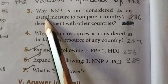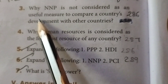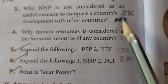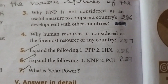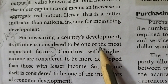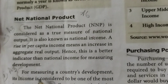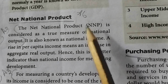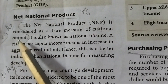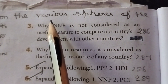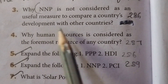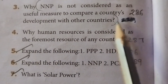Third question: why is NNP not considered a useful method to compare a country's development with other countries? (Page number 286.) For measuring a country's development, its income is considered one of the most important factors. The Net National Product (NNP) is considered as a true measure of national output, however it is not considered a useful method to compare a country's development with other countries.